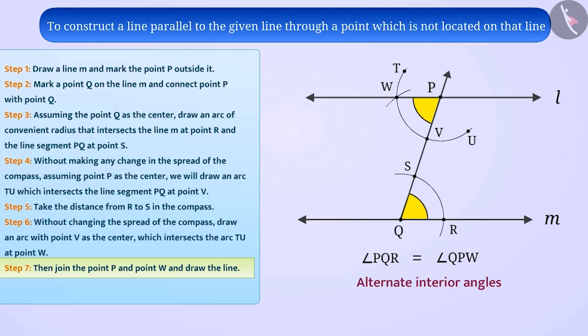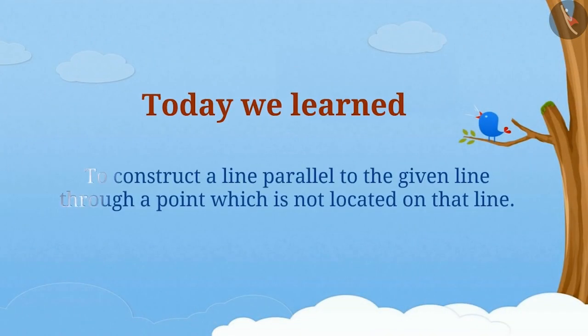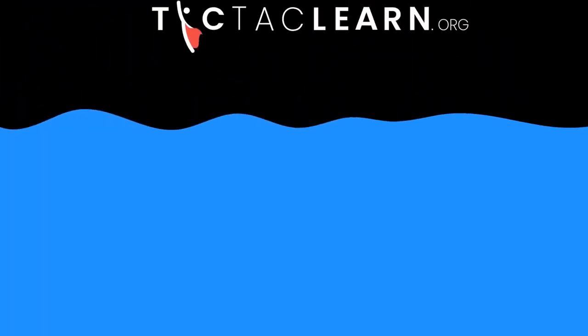Therefore, we can say that line L is parallel to line M. So, today we learned how to construct a line parallel to a given line through a point not on the line. In the next video, we will see some examples related to it. We'll see you next time. Bye.